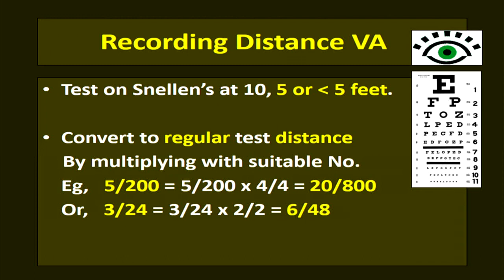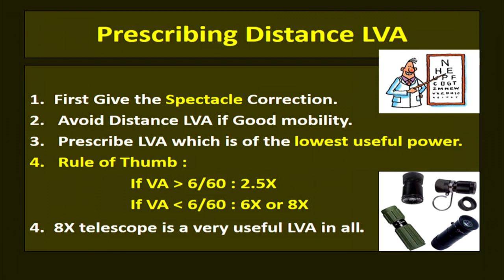When prescribing distant low vision aids, first give spectacle correction to increase sharpness of the retinal image. Avoid distant low vision aids if mobility is good — for example, if the patient has 4/60 or 5/60 vision and can navigate the environment normally, there is no need for a distance aid. Prescribe the lowest useful power. As a rule of thumb, if vision is more than 6/60, give 2.5x magnification; if less than 6/60, give 6x or 8x.